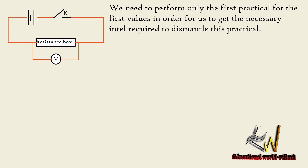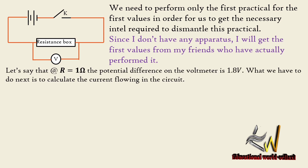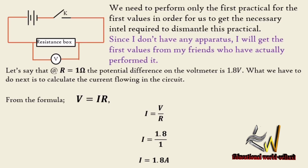We need to perform only the first practical to get the necessary information. Since I don't have apparatus, I'll get the first values from friends who performed it. When the resistance box is equal to 1 ohm, the potential difference on the voltmeter is 1.8 volts. Using V = IR, current equals voltage over resistance, so the current in the circuit is 1.8 amperes.